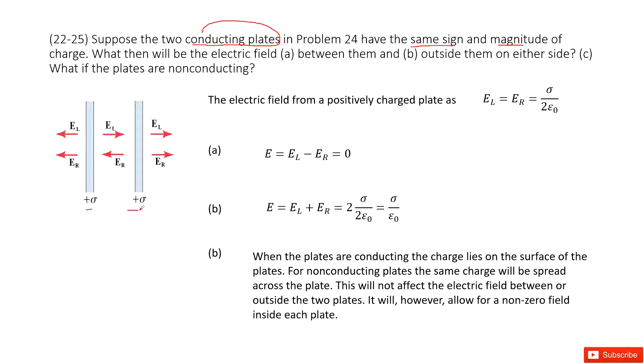We need to find electric field between them and outside of them. We can consider the electric field for the positive charged plate. We learned in the previous chapter is σ divided by 2ε₀. Therefore, the EL and ER is the magnitude for this electric field for this charged plate.